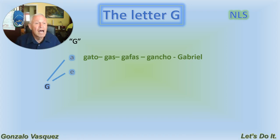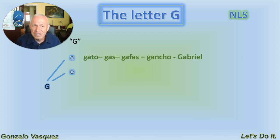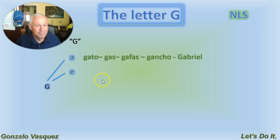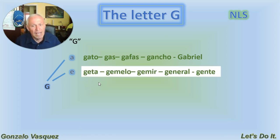Now, la letra G con la letra E. This is the second sound. In this case, it's going to sound like J — or like H in English. So, H. That's why I highlight this part, because it's changing the sound.